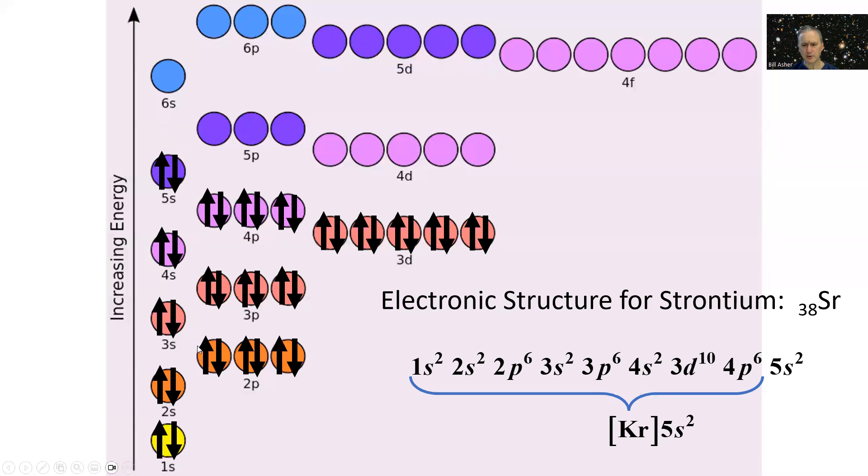We write this as 1s² 2s² 2p⁶ 3s² 3p⁶ 4s² 3d¹⁰ 4p⁶ 5s². And now we can see the power of this noble gas format - we can abbreviate all of these electrons as krypton. So krypton 5s², and we've saved all of that writing.